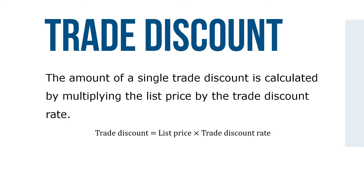The amount of a single trade discount is calculated by multiplying the list price by the trade discount rate. So: trade discount equals list price times trade discount rate.